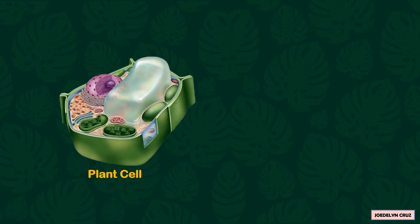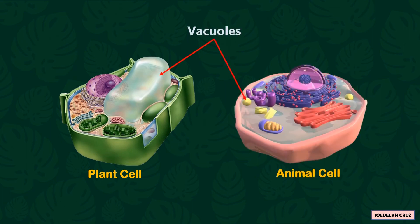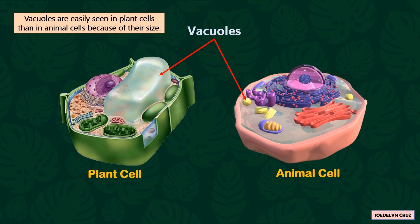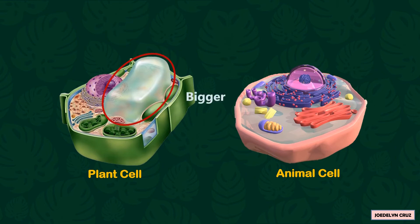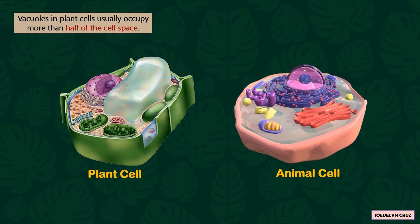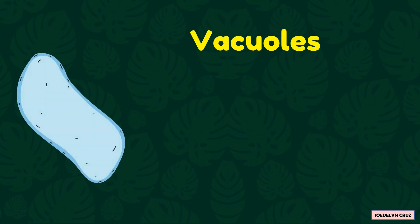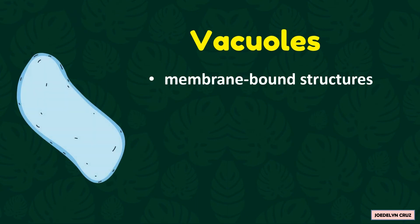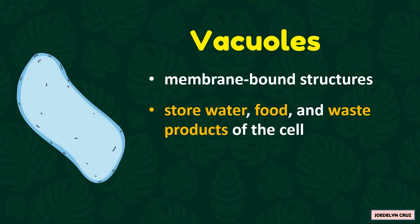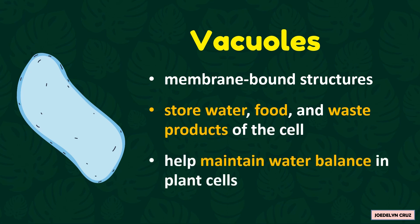The other organelles of plant cells that are also present in animal cells are vacuoles. However, vacuoles are more easily seen in plant cells than in animal cells because of their size. Vacuoles in plant cells are bigger than in animal cells and usually occupy more than half of the cell space. Vacuoles are membrane-bound structures that store water, food, and waste products of the cell.